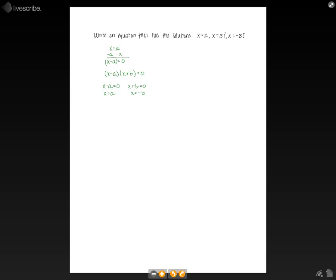So when we're given the solutions, we basically want to work backwards from there. We can build our polynomial by saying x minus 2 times x minus 3i times x plus 3i equals 0.